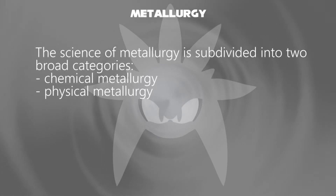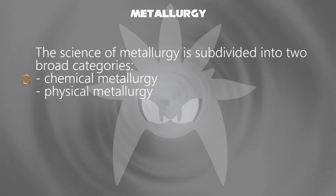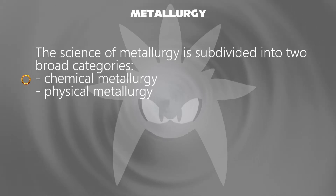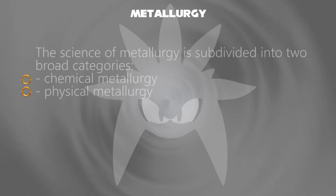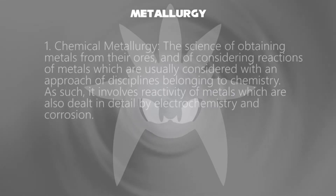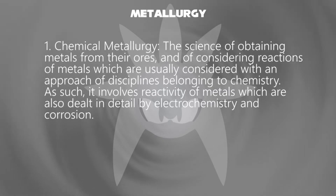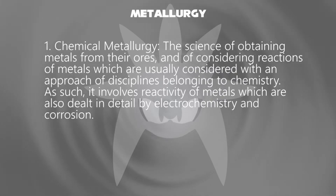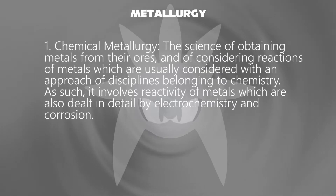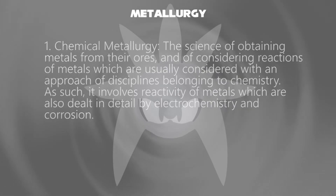The science of metallurgy is subdivided into two broad categories: chemical metallurgy and physical metallurgy. In chemical metallurgy, the science of obtaining metals from their ores and considering reactions of metals are usually approached through disciplines belonging to chemistry. It involves reactivity of metals, which are also dealt with in detail by electrochemistry and corrosion.